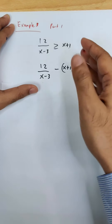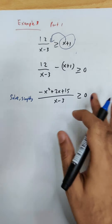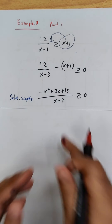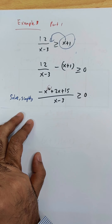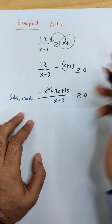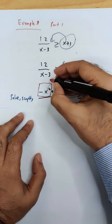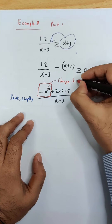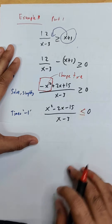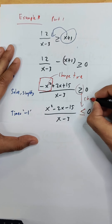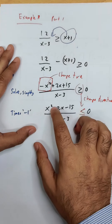For the third example, we do the same: transfer the term to the left side, solve and simplify. There's a catch here — after simplifying you still have a quadratic with a negative x squared. You need to change it to positive first by multiplying through by negative one, and remember that multiplying by negative one flips the inequality sign.